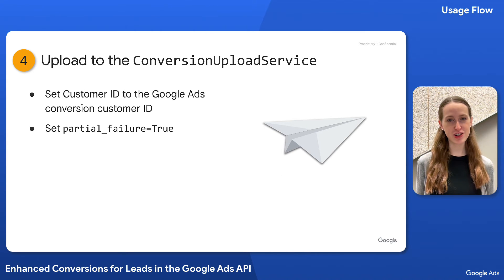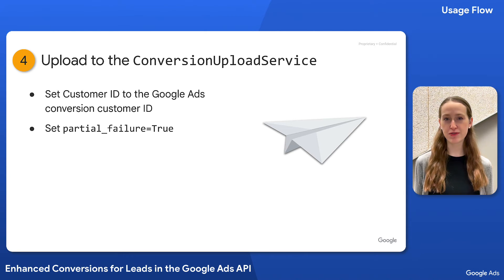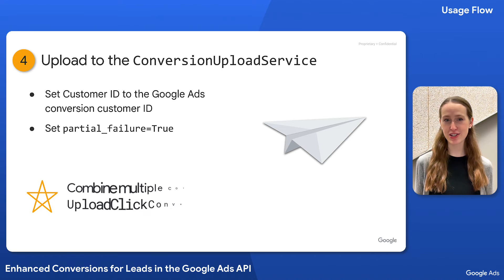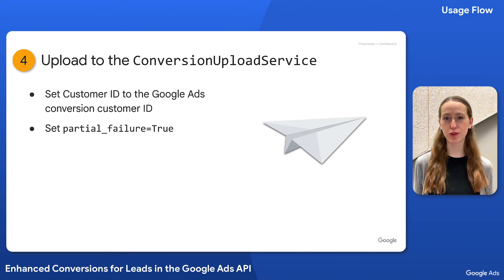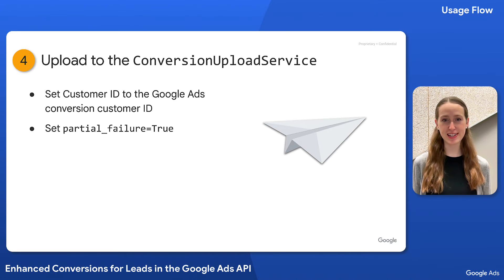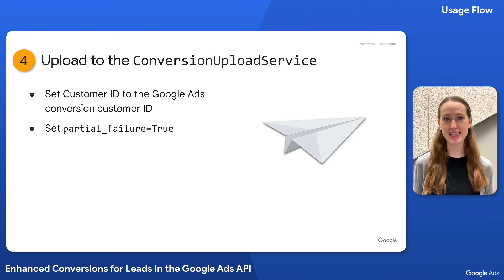Now that our click conversion is ready, the next step is to send it to the API through the conversion upload service. If you have multiple conversions to upload, combine the operations into a single upload click conversions request for optimal efficiency. Make sure that you upload to your Google Ads conversion customer and set partial failure to true. These are required for all conversion uploads, not just enhanced conversions for leads.